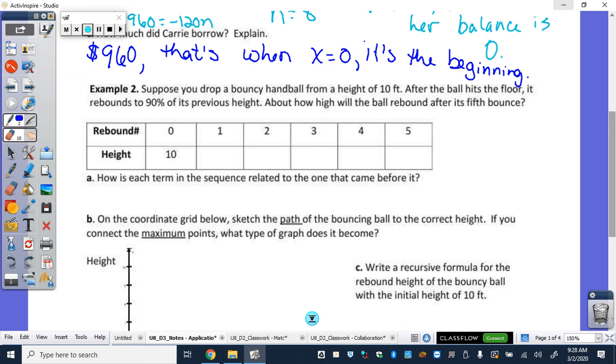So let's look at our second one. Suppose you drop a bouncy handball from a height of 10 feet. After the ball hits the floor, it rebounds to 90% of its previous height. About how high will the ball bounce after its fifth bounce? So again, you drop it from 10 feet, so that's why right here at 0, I have 10, because it started at 10 feet. And then it bounces once, so 10 times 90% gives us what? 9. So after it bounces once, it only goes up 9 feet.